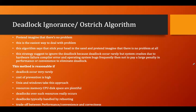That particular behavior is the basis for deadlock ignorance — the system assumes it will never go into deadlock, so it will not use any type of deadlock prevention, avoidance, or detection and recovery. So what is the deadlock ignorance algorithm? First, it will pretend and imagine that there is no deadlock. This is the easiest way to deal with the problem. This algorithm says: stick your head into the sand and pretend there is no problem at all.